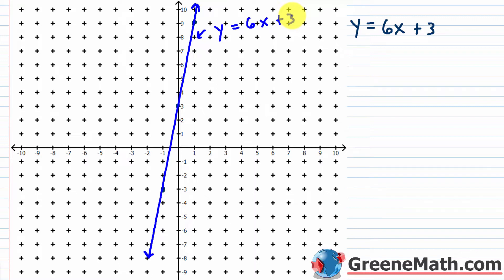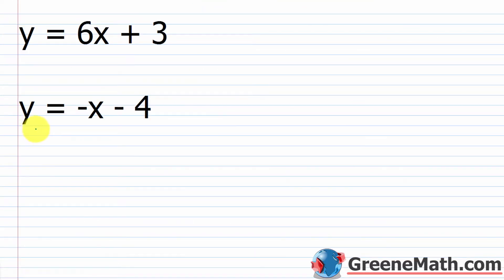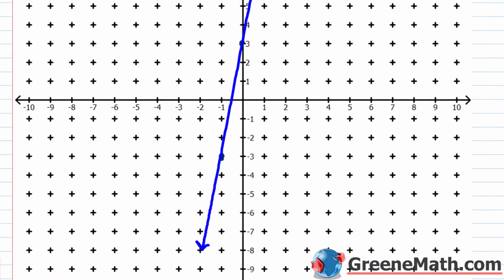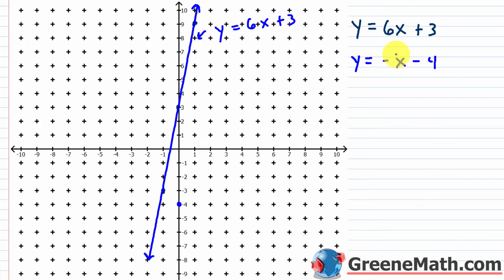Now I want to look at this other linear equation in two variables. Notice the variables are the same — we have y and x in both. What happens if I graph this equation on the same coordinate plane? So y equals negative x minus 4. The y-intercept occurs at (0, -4) and my slope is negative 1.